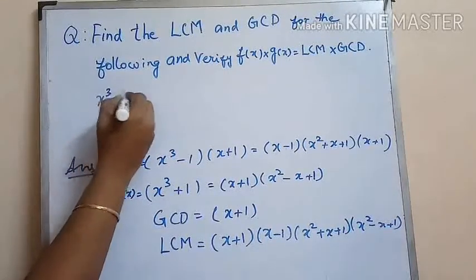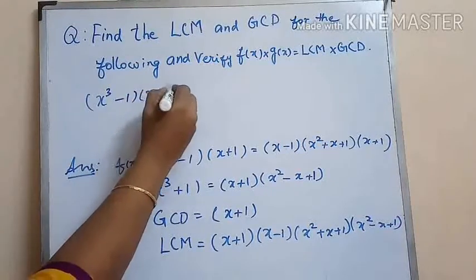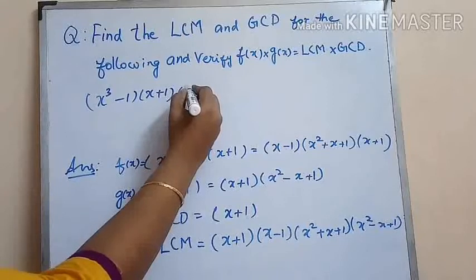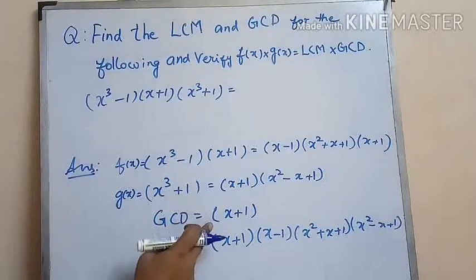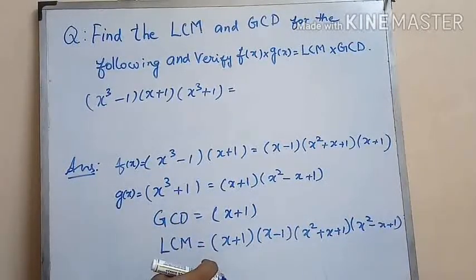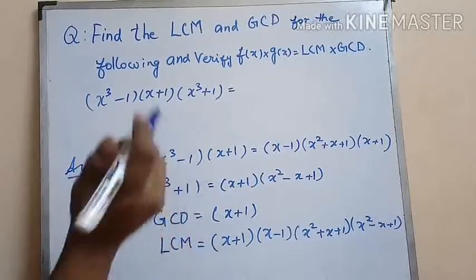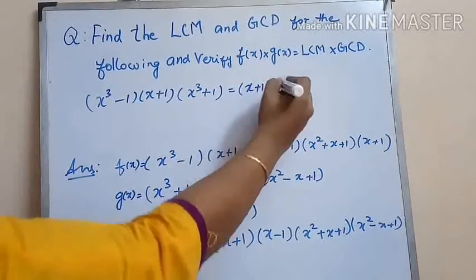f(x) times g(x) is equal to x cubed plus 1 times x cubed minus 1 times x plus 1. And LCM times GCD is x plus 1 times